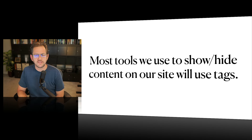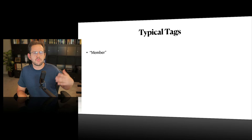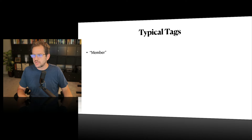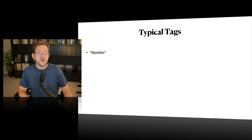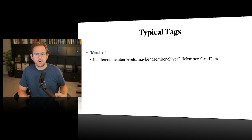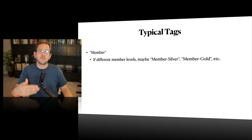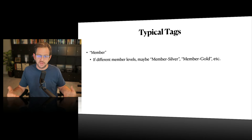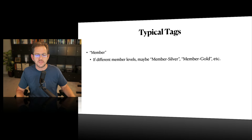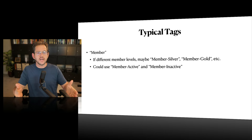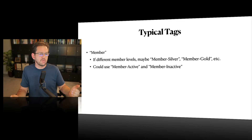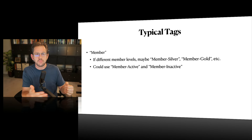Some typical tags you might end up using would be a member tag — that's what we did in our last video where somebody joins, becomes a member, and you add the member tag to their profile, which unlocks all of the protected content. If you have multiple membership levels, you'd get more granular: something like member-silver, member-gold, whatever your levels are called. You would rename those to suit your particular site. You could also integrate the status into the actual tag — for example, member-active, member-inactive — so you can tell at a glance whether they're active or not.